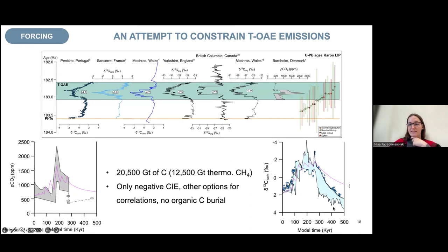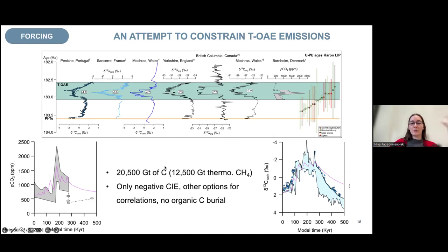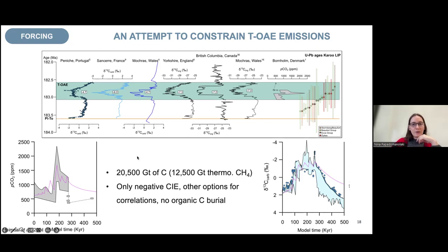In gray is the CO₂ change, with a large increase at the start of the negative excursion. They tried different scenarios to produce best-fit curves and found you would need about 20,500 gigatons of carbon — a gigaton being 10¹⁵ grams. About half of that was probably methane in this scenario. However, a lot was not taken into account: the model used is focused on atmosphere and geology, with a poorly represented ocean and no organic carbon burial. Once you include those, you'd likely need even more carbon. So this is a starting point but still an open question.